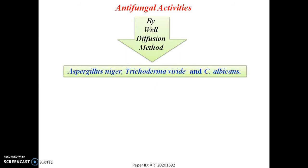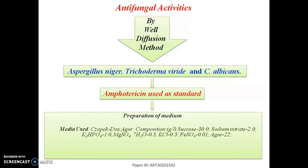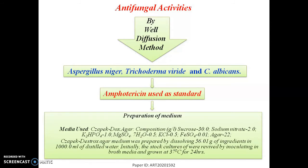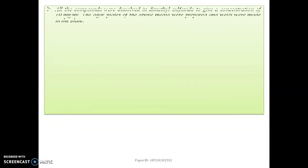The fungi used were A. niger, Trichoderma viride, and Claviceps. Amphotericin was used as a standard drug. Here, I have mentioned the preparation of the medium. Preparation of the medium is one of the important steps in any microbiological assay of any compound. So, once the medium is prepared, we will move to the next experimental part.